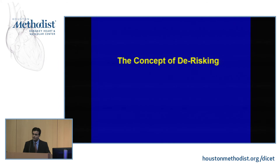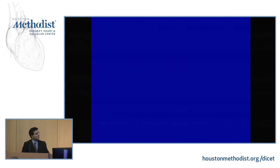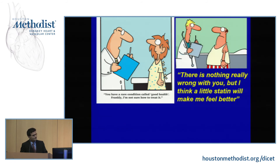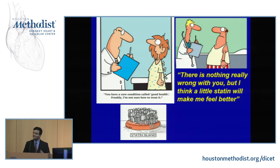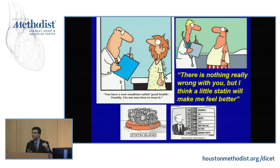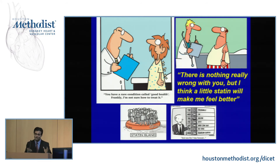The next part of the talk is about de-risking. When we use our risk stratification tools, we really over-treat a lot of patients. This is a classic example — you have a rare condition called good health, and sometimes we are living on the statin island. There's a lot of uncertainty, especially with our thresholds being moved down to 7.5%. We definitely have some over-treatment there.